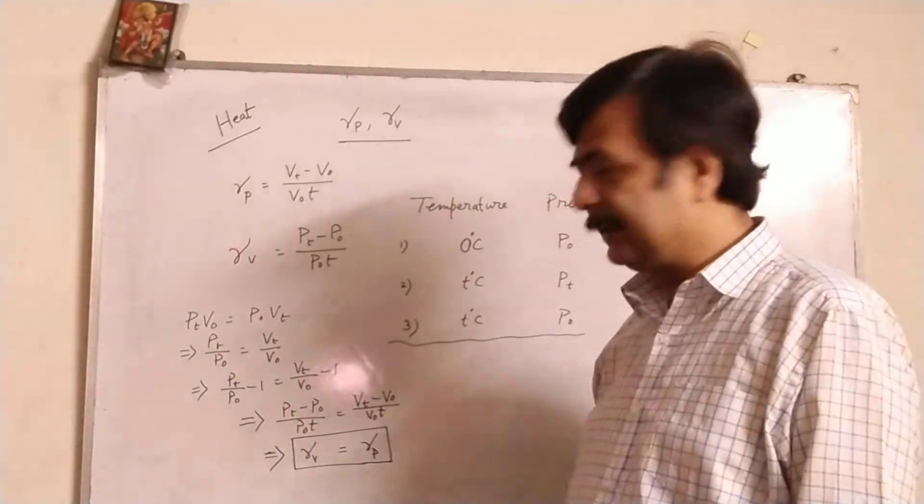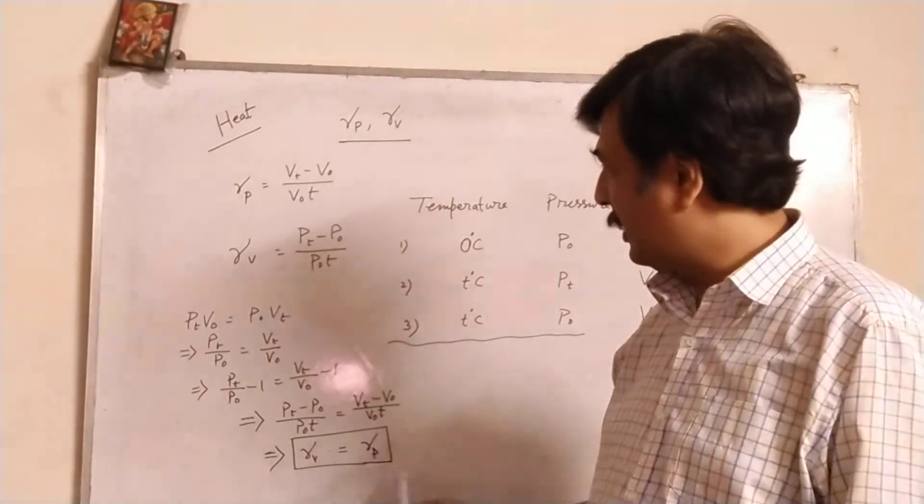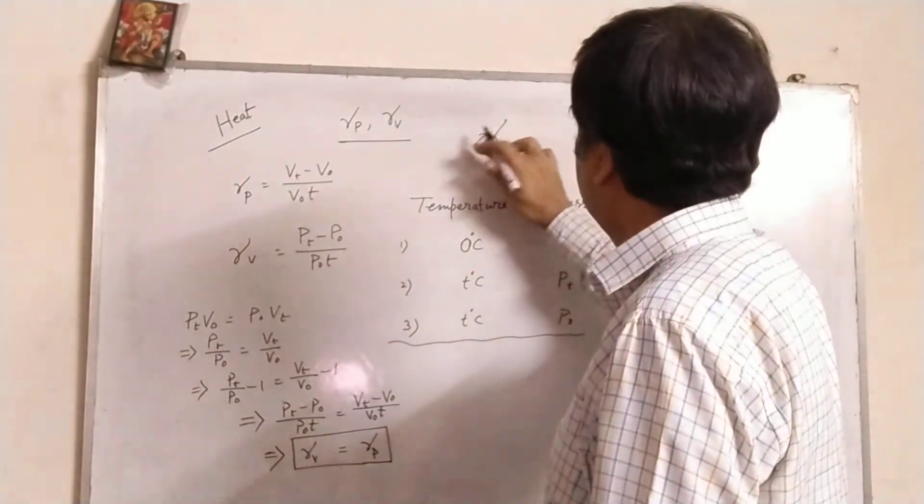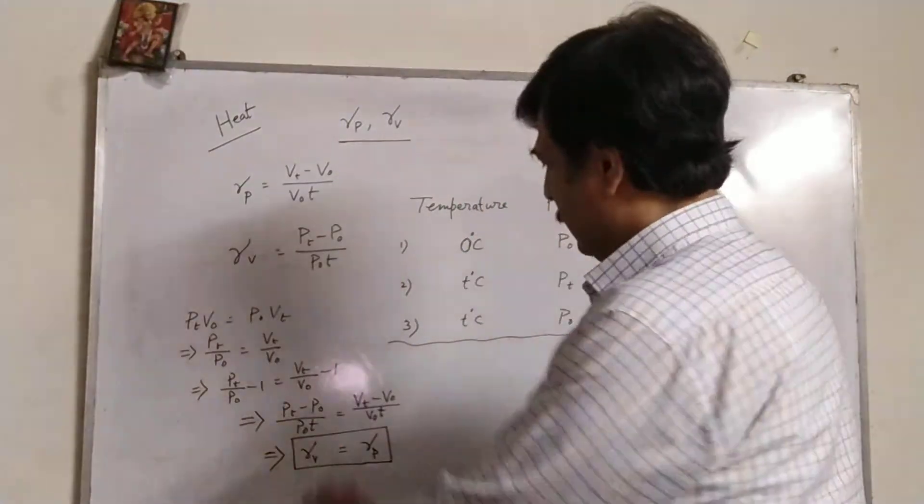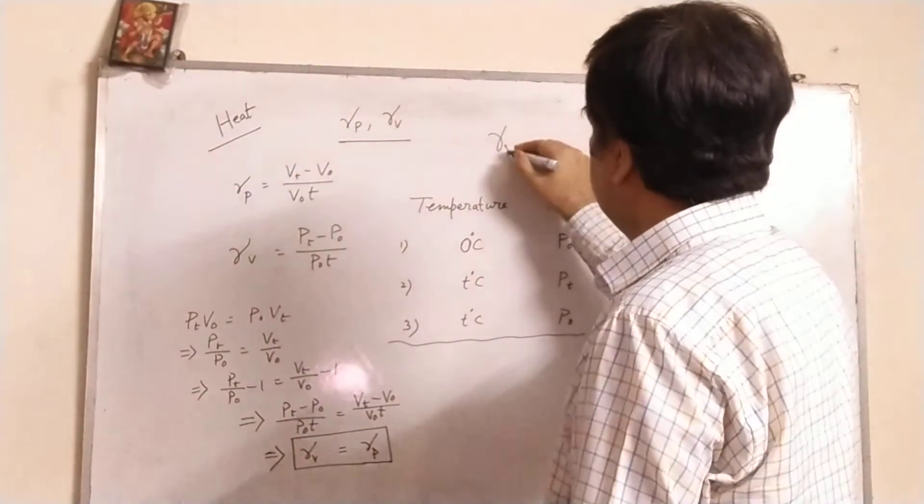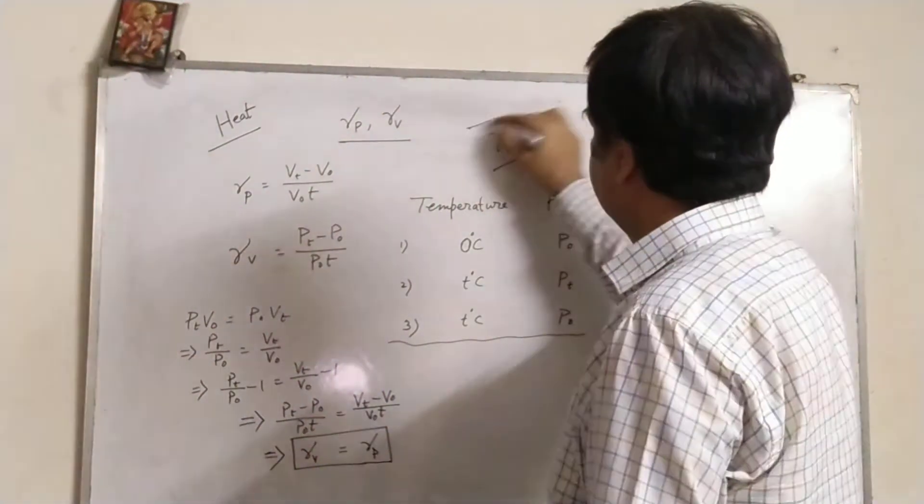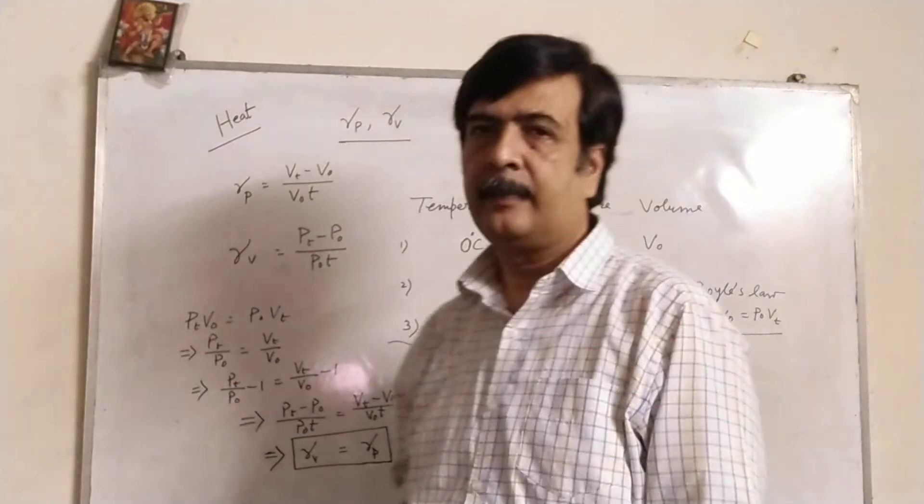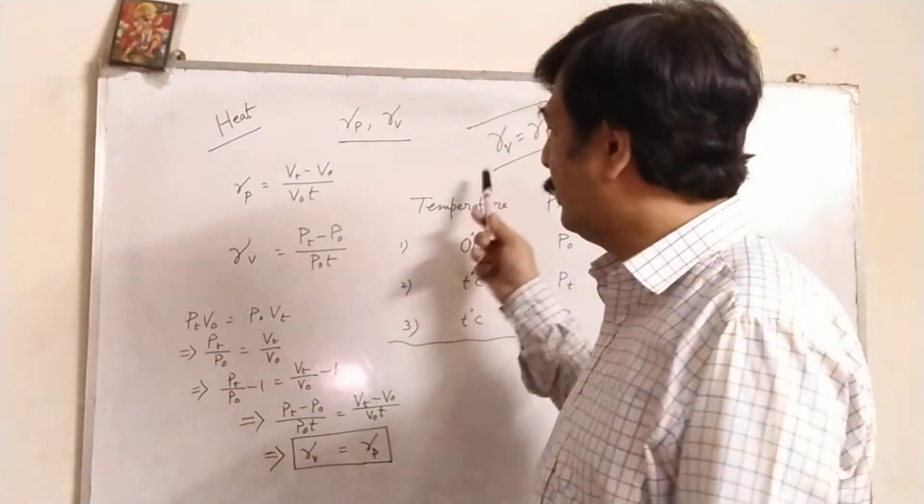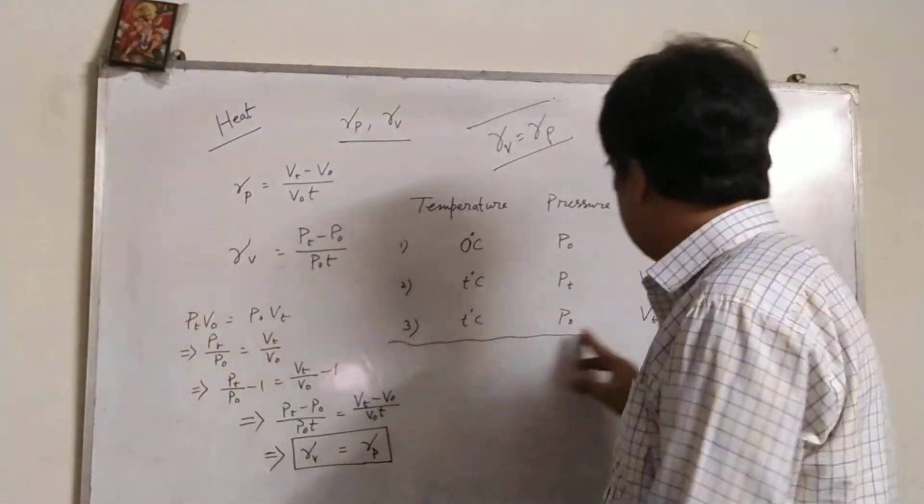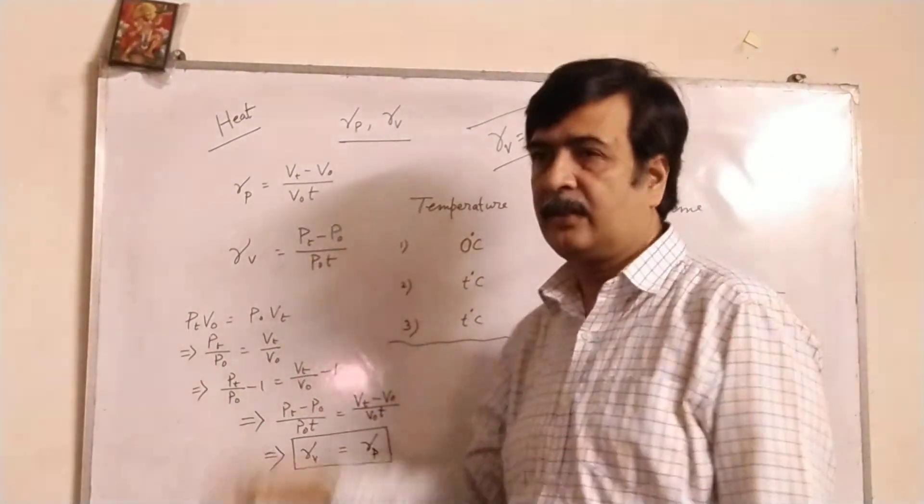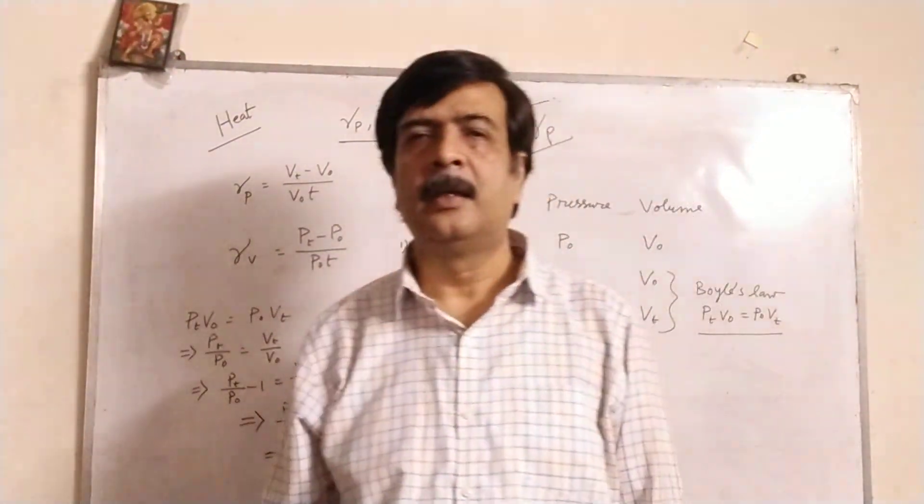The result is gamma_v equals gamma_p. When it is changing P, then gamma_v. So gamma_v equals gamma_p. They are equal for gases. Hope you have understood.